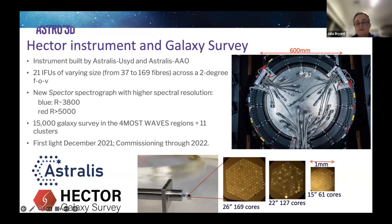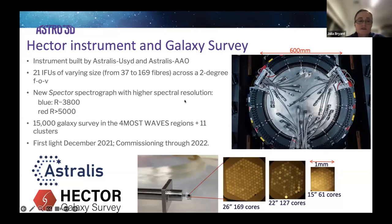We now go up to double that size — 169 cores, 26 arcseconds across the galaxy in Hector. This is a picture of the Hector focal plane on the AAT with all the hexabundles configured for a galaxy field. The important aspect of Hector is the improved specs compared to what we had for SAMI.